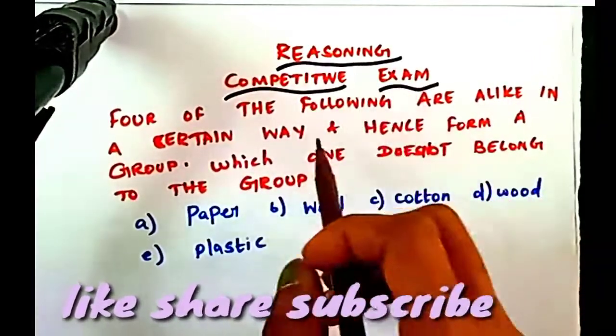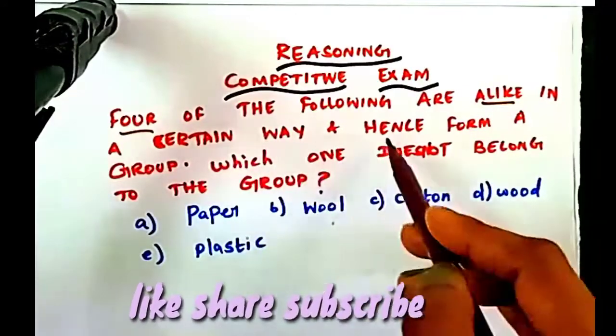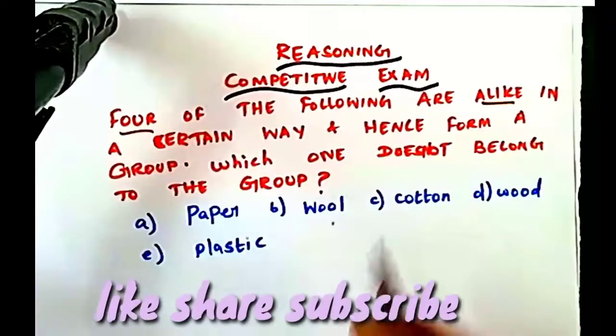Reasoning topping competitive example. Four of the following are alike in a certain way and hence form a group. Which one does not belong to the group?